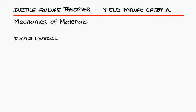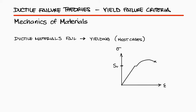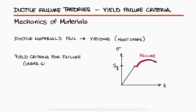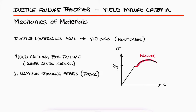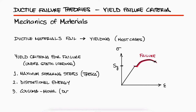In common applications, ductile materials are considered to fail when yielding occurs, that is, when plastic or permanent deformation occurs. Three of the main ductile failure theories, called yield criteria for failure under static loading, are the maximum shearing stress, also called Tresca, distortional energy, and the Coulomb-Moore criteria for ductile materials.